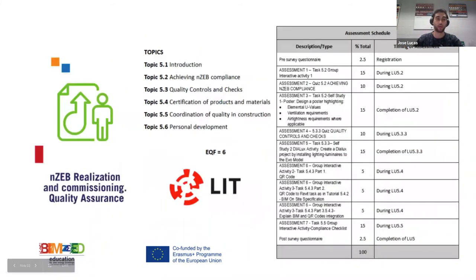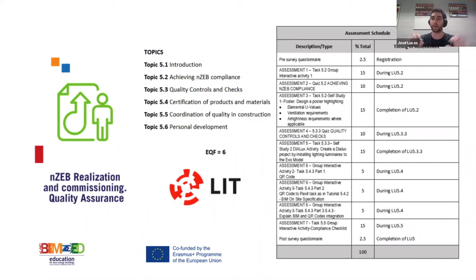Learning unit 5 is about quality assurance of design and commissioning. It gathers everything a building envelope and building services team should be checking, combined into one learning unit. It's designed for people in the construction site, while the previous units were more focused on the design team.